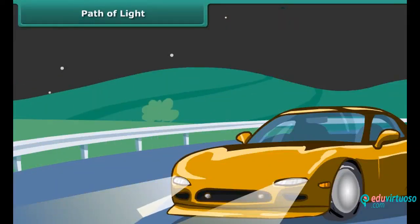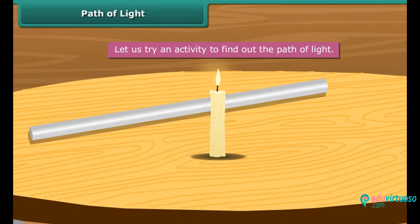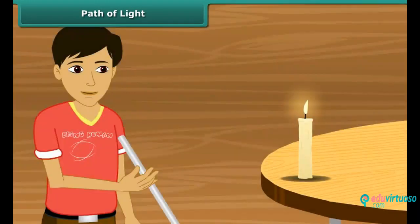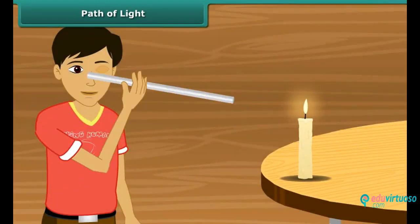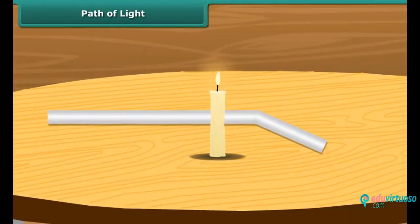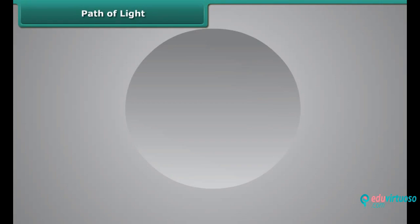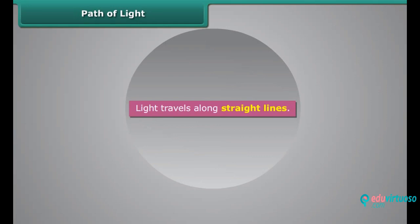Path of light — have you ever noticed the headlamps of a car giving straight beams of light? Come, let us try an activity to find out the path of light. Take a lighted candle and a straight pipe. Now look at the lighted candle through that straight pipe — you can easily see the candle. Now take a bent pipe and look at the candle through it. Are you able to see the candle's flame? Probably not. So now you know that light travels along straight lines.